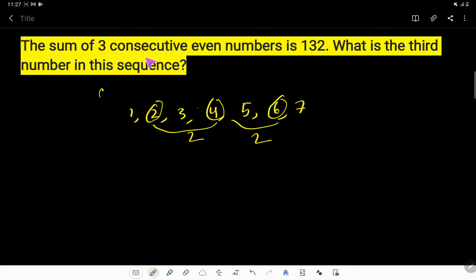Here we have three consecutive even numbers. So let us say the first consecutive even number is x. Then our second number will be x plus two.